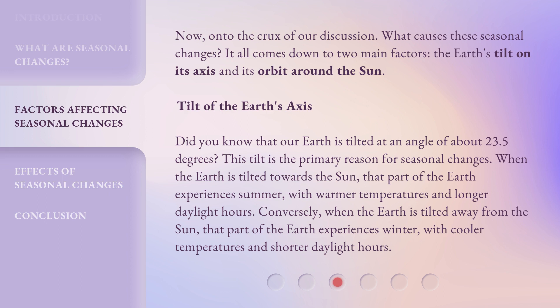Conversely, when the Earth is tilted away from the Sun, that part of the Earth experiences winter, with cooler temperatures and shorter daylight hours.